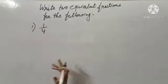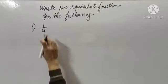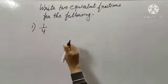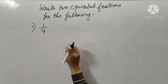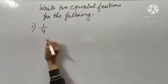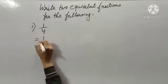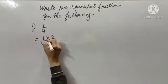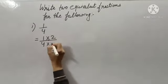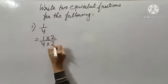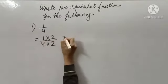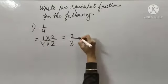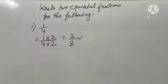So what I will be doing? I will be multiplying my numerator as well as my denominator with any number of my own choice. Suppose here I am multiplying my numerator with 2, so I need to multiply my denominator also with 2. 1 times 2 are 2, and 4 times 2 are 8. So this is my first equivalent fraction.